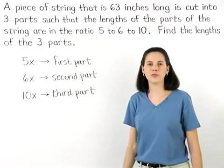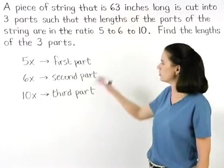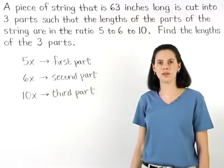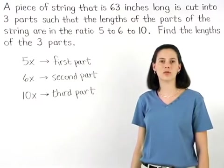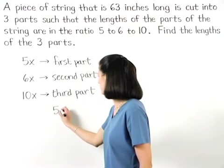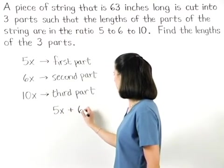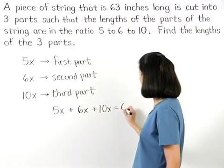Now, since we know that the original piece of string was 63 inches long, our three parts must add to 63 inches. So we can set up the equation 5x plus 6x plus 10x equals 63.